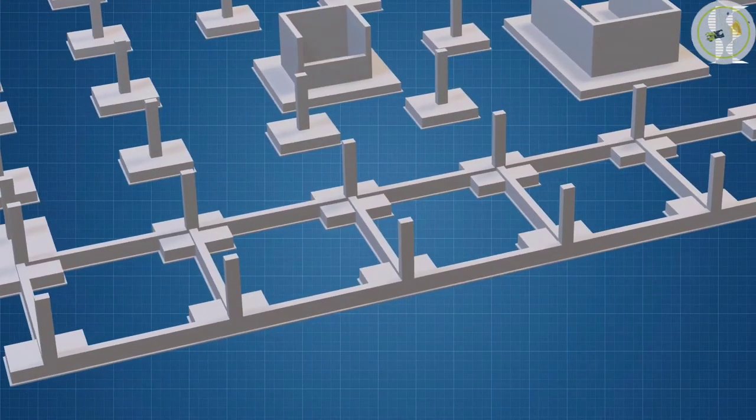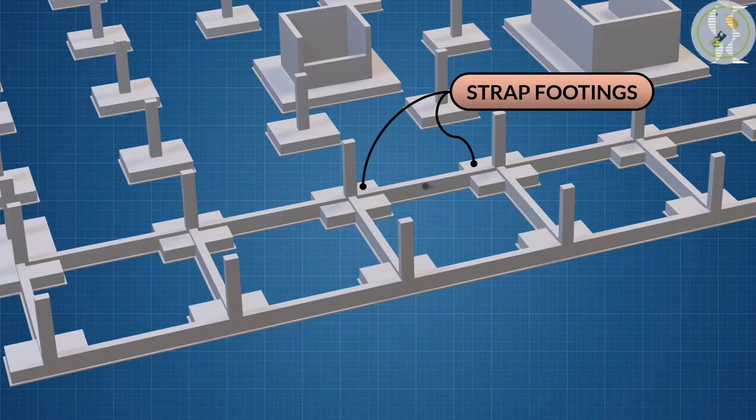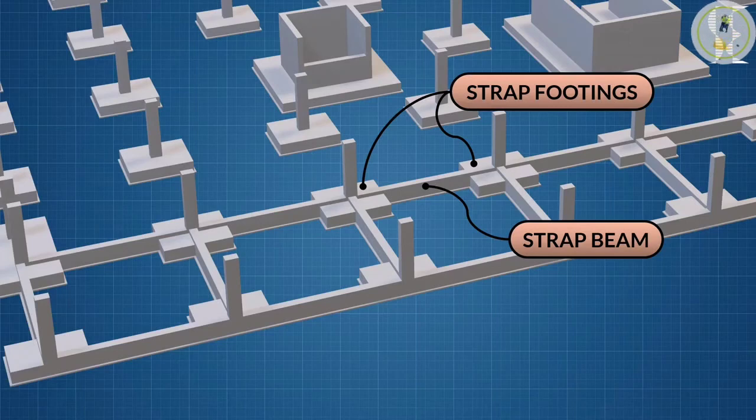A strap or cantilever footing consists of two isolated footings connected with a structural strap or a lever. The strap connects the two footings such that they behave as one unit. The strap is designed as a rigid beam. The individual footings are so designed that their combined line of action passes through the resultant of the total load.